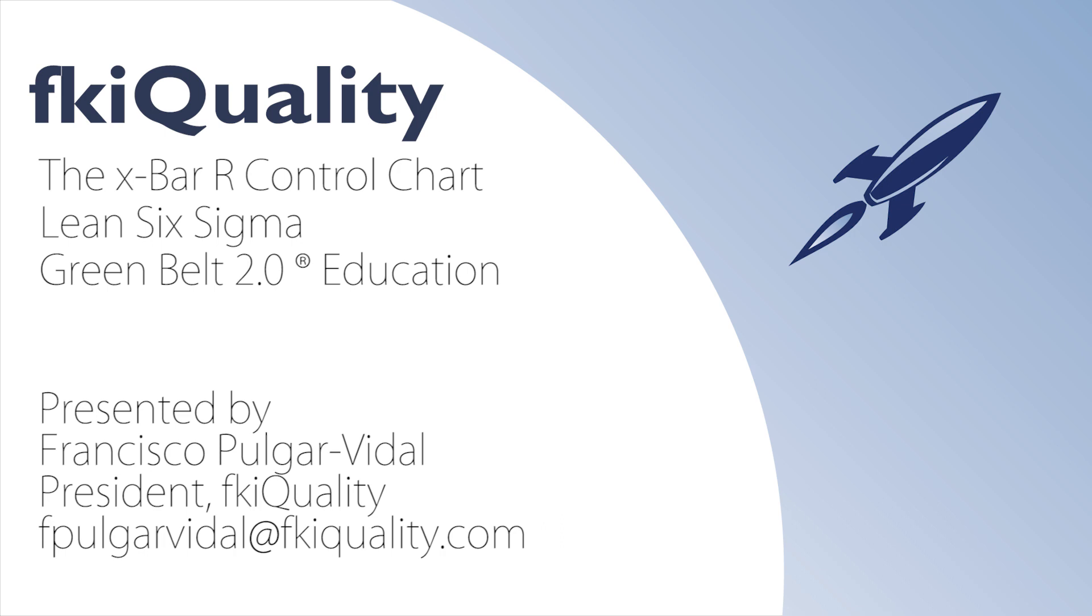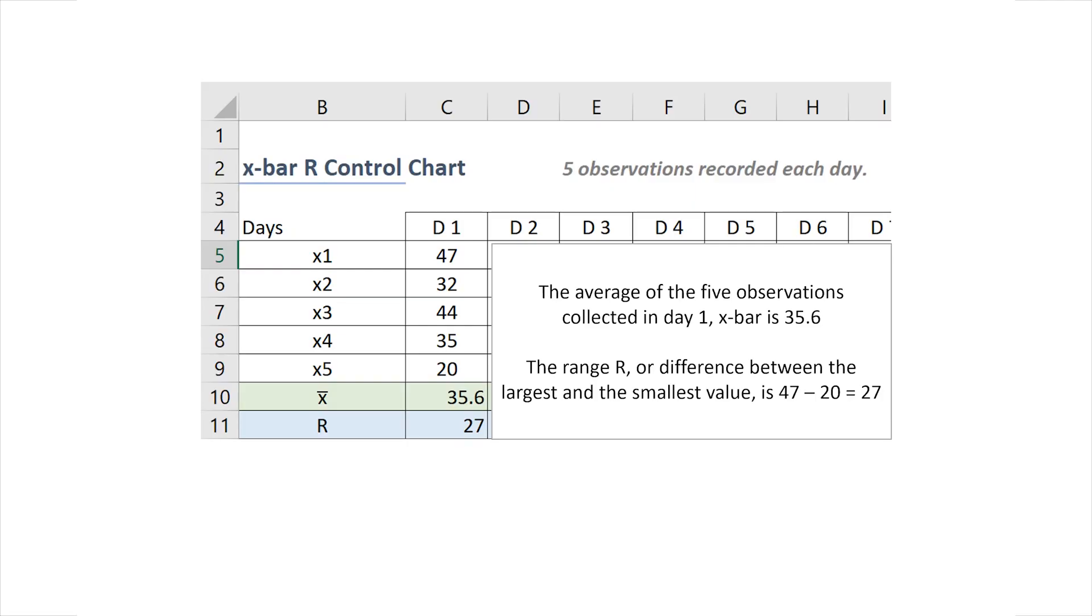The X-bar R control chart is used when collecting data in subgroups, that is, under nearly the same conditions in a rather short period of time. In this case, we're going to be collecting five observations every day, which are labeled as X1, 2, 3, 4, and 5 on the B column on the chart that we're presenting right now.